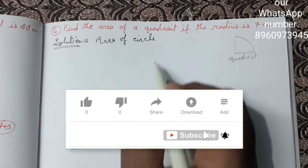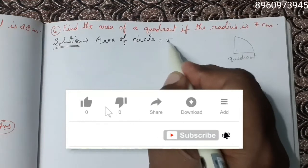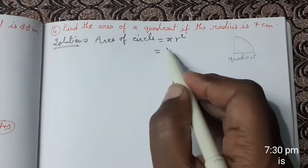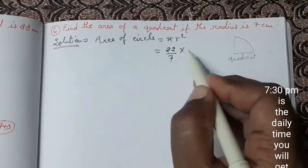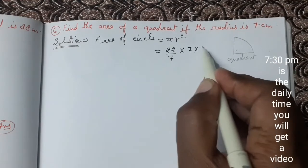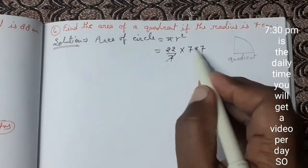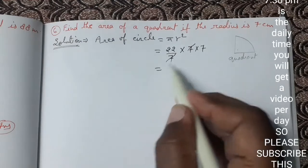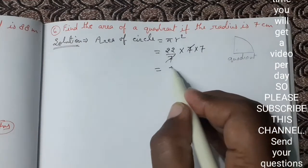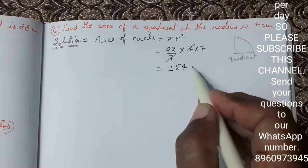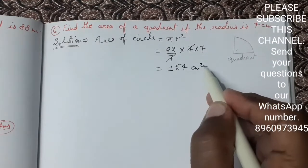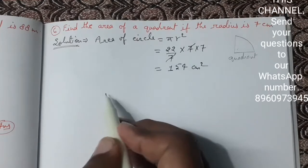First we will write area of circle equals πr². Pi value is 22 upon 7, radius is 7 into 7. We multiply 22 and 7 to get 154 cm² as the area of the circle.